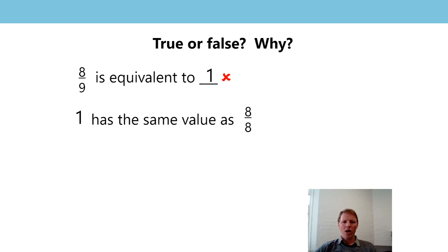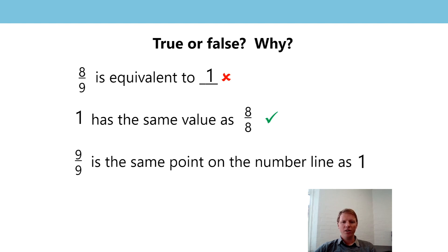My next statement: 1 has the same value as 8 eighths - true or false? That one is true. Why? Because in the fraction, the numerator and the denominator have the same value, so we can say that the fraction is equal to 1, or it has the same value as 1. Final one: 9 ninths is the same point on the number line as 1. Are 9 ninths and 1 equivalent to each other? They are - because the numerator and the denominator in the fraction 9 ninths is the same, so it has the same value as 1, and that means on a number line they would be at the same point.